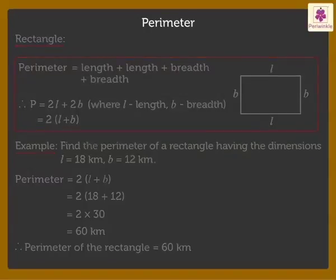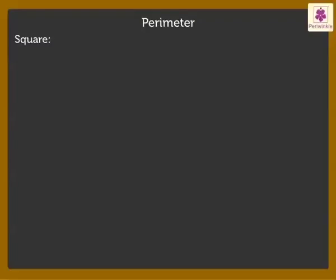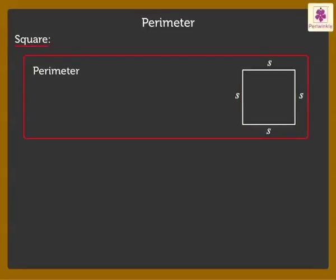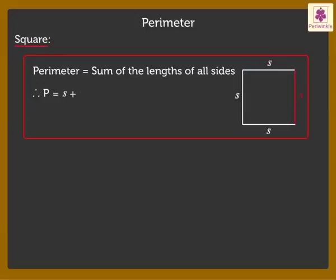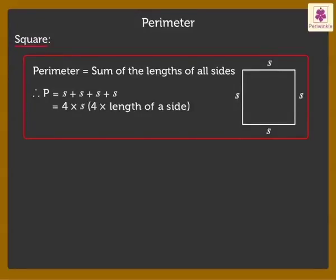Finally, let us look at the perimeter of a square. We know that the lengths of the four sides of a square are the same. Thus, the perimeter of a square can be calculated by adding all four sides. Perimeter of a square is equal to S plus S plus S plus S, which is equal to 4 times the length of a side.